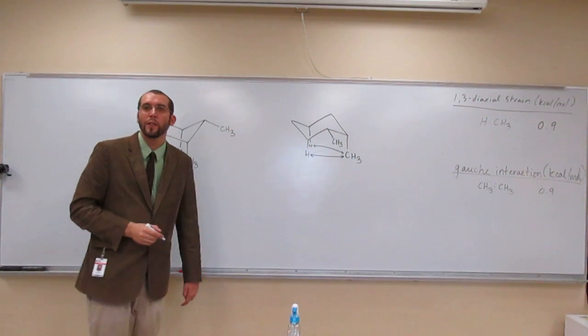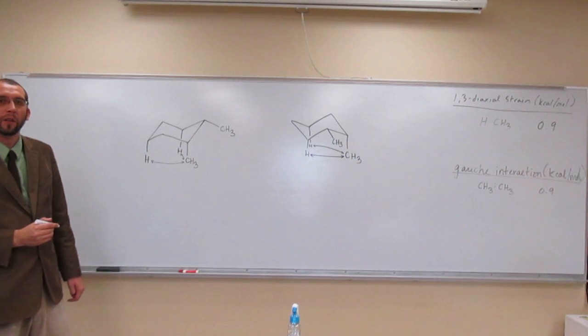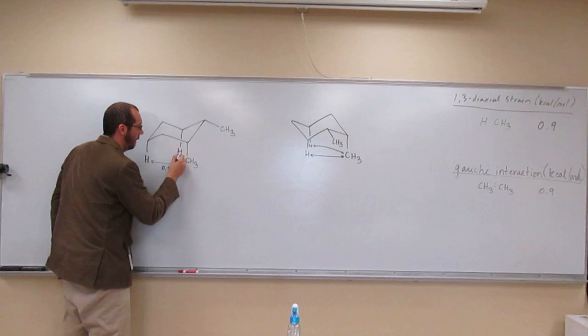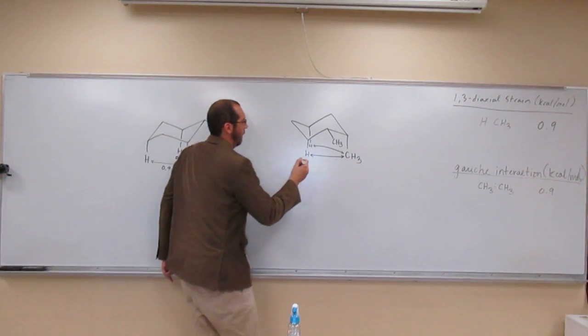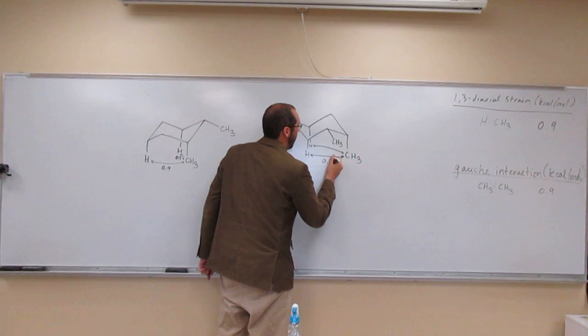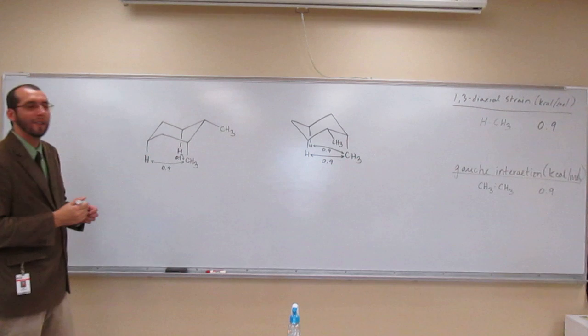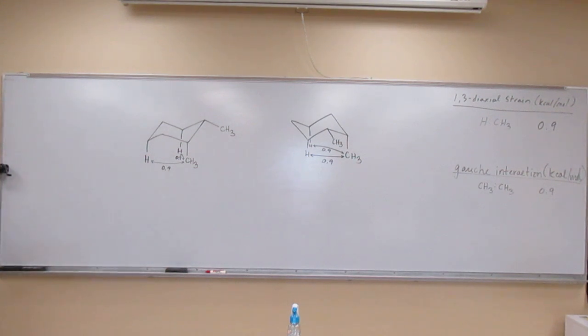So each one of those is how many kcals per mole? 0.9. So we got 0.9 there, 0.9 there, 0.9, 0.9 there. Do you all see any other interactions? There's probably a gauche one there, right? There's probably a gauche one, since I wrote it up there for you.